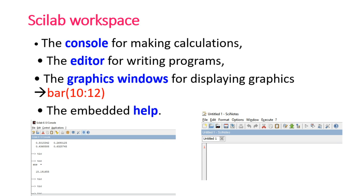Once you open the Scilab workspace, you will see two default workspaces: the console for calculations and the editor for writing programs. If you want to visualize graphics, there is a graphical window for displaying graphs, and an embedded help browser window for accessing help.